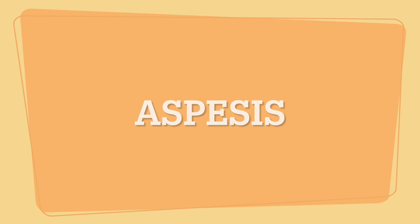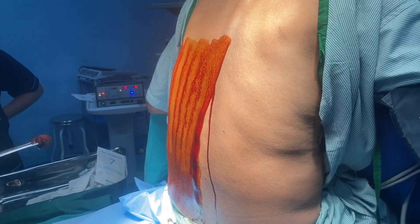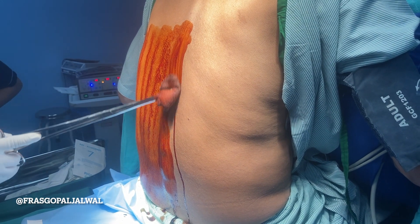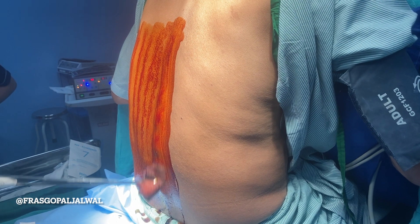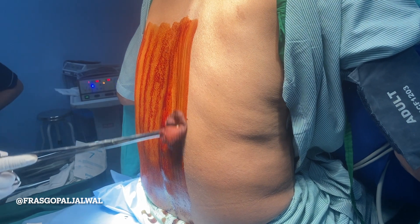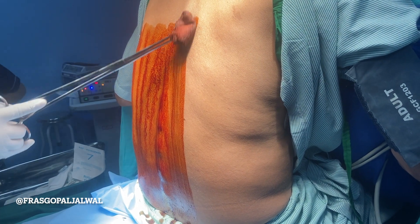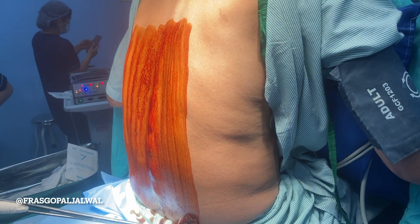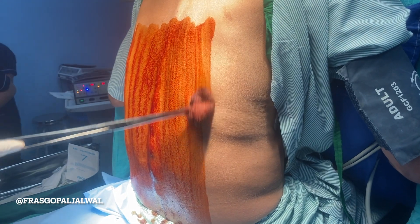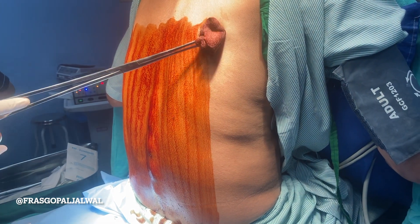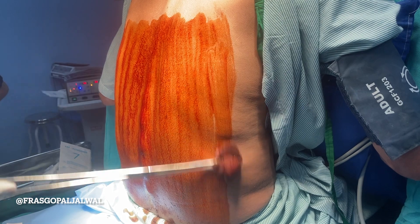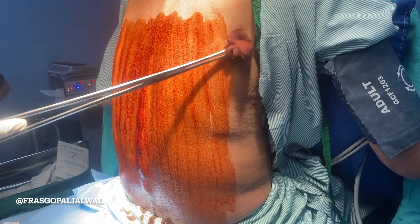Asepsis: Before giving the Spinal Anesthesia, we have to maintain aseptic precautions. We can use Betadine or Stirlium before performing the Spinal Anesthesia.